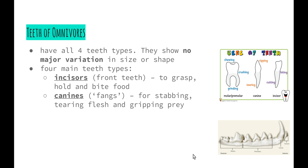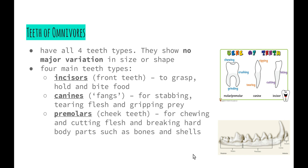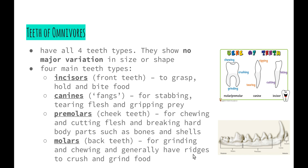Moving further around from the front of our mouth, we have canines — sometimes referred to as fangs — which stick out to a point and are used for stabbing, tearing flesh and gripping prey. We don't need to grip prey as such since our food is usually killed and cooked, but we still use canines to stab into hard food and tear meat. Our premolars are our cheek teeth, used for chewing and cutting flesh and breaking hard parts such as bones and shells. Lastly, we have our molars — our back teeth — which are quite flat and used for grinding and chewing, with ridges to crush and grind food. Those ridges are usually where food gets stuck because they're quite pronounced.